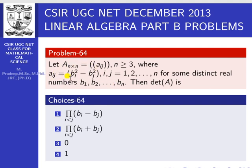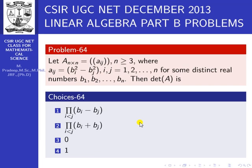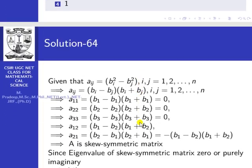First of all, aij equals bi squared minus bj squared. From this, it is a very simple idea: bi squared minus bj squared can be expressed as bi minus bj multiplied by bi plus bj. That is the a squared minus b squared equals a minus b times a plus b factorization. After applying this, I will consider just a 3 by 3 matrix.